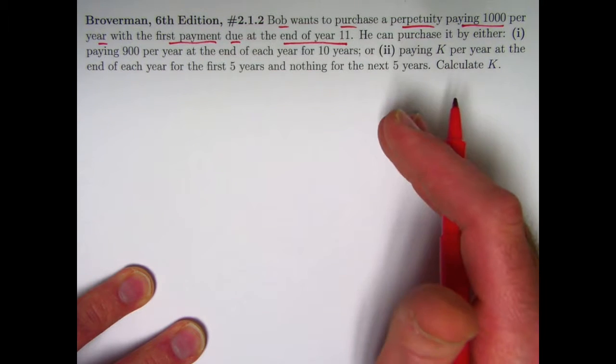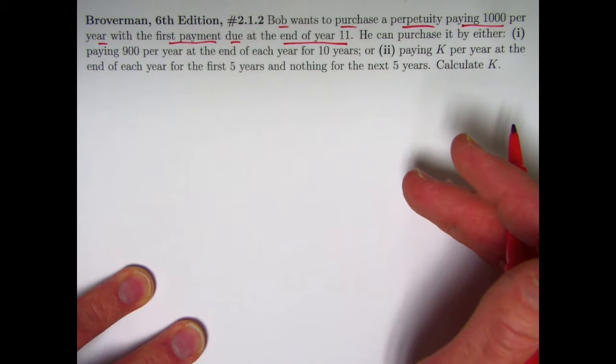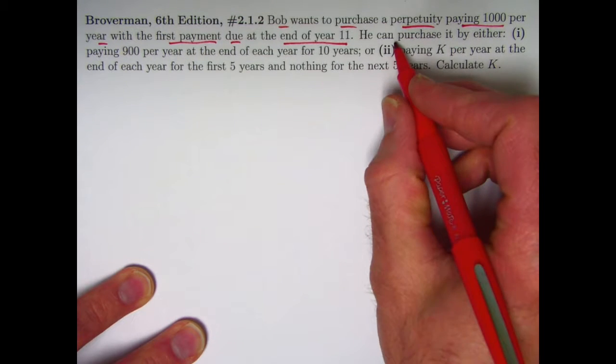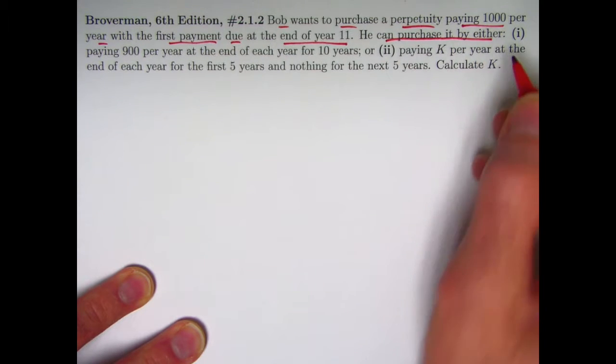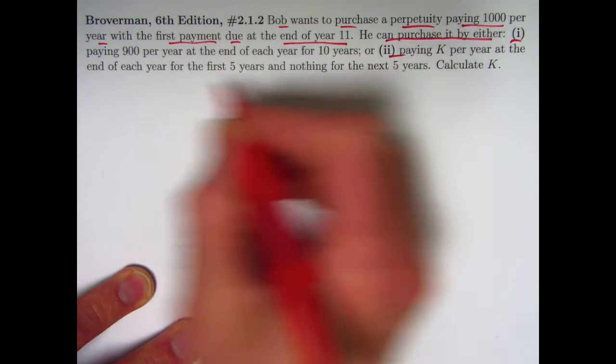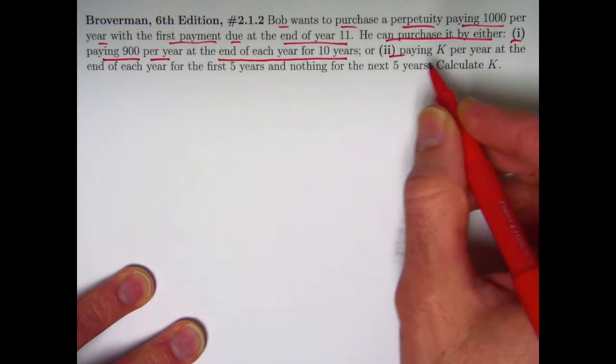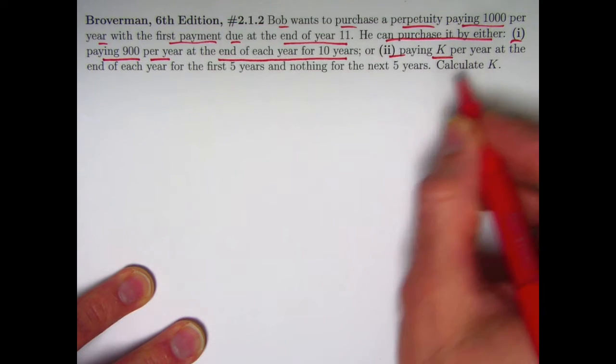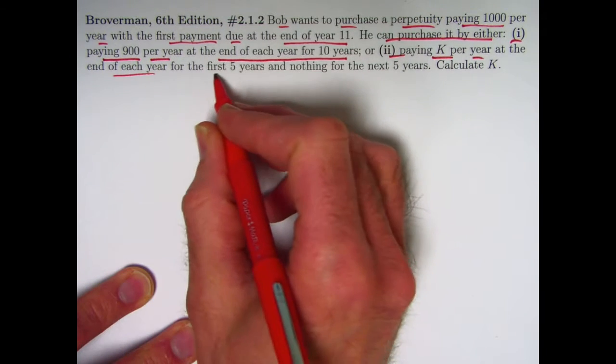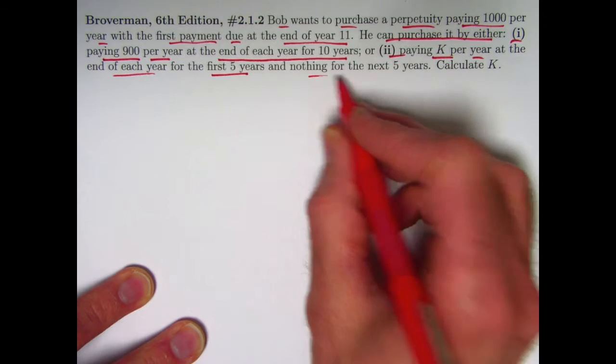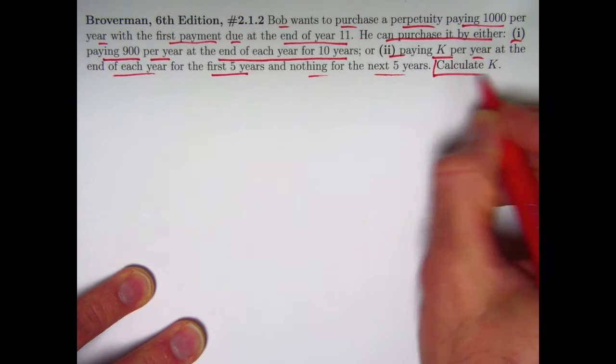Of course, Bob will not live forever, but maybe he can pass it on to his descendants. He can purchase it either by one of two ways: either by paying $900 per year at the end of each year for 10 years, or by paying $k per year at the end of each year for the first five years and nothing for the next five years. Calculate $k.